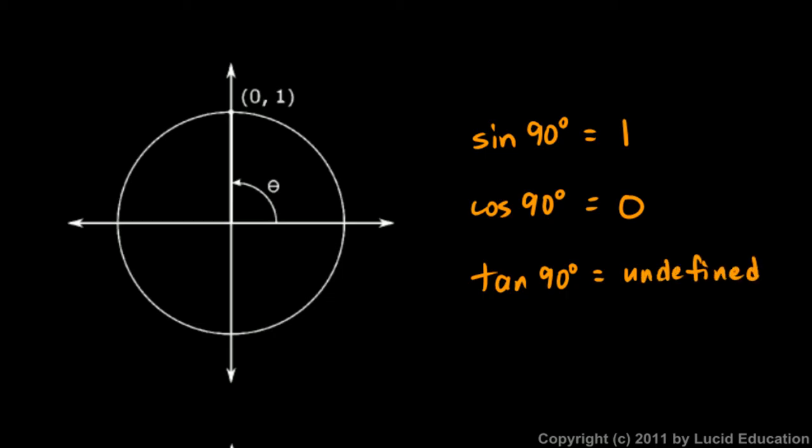The tangent of 90 degrees is undefined — we can't divide by 0. There is no tangent ratio for a 90 degree angle.